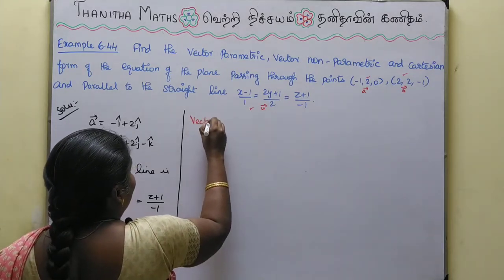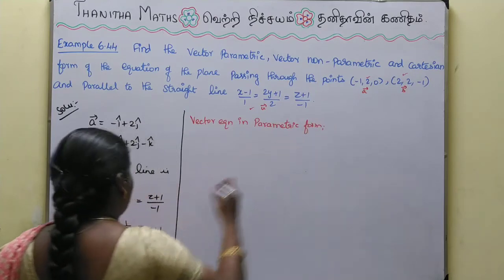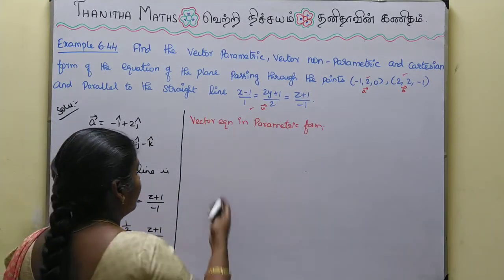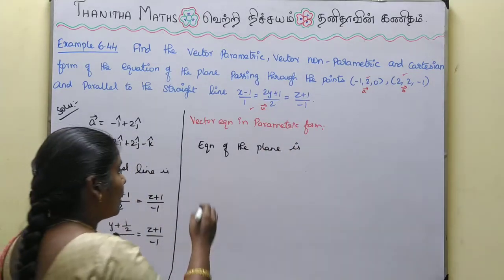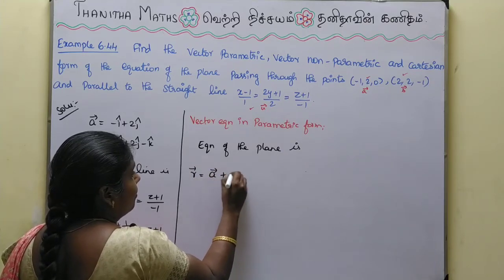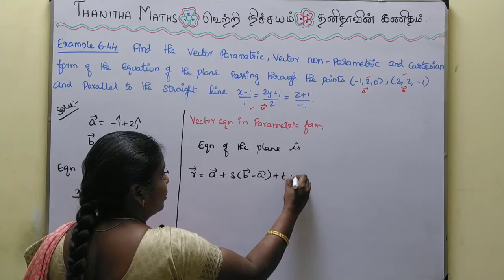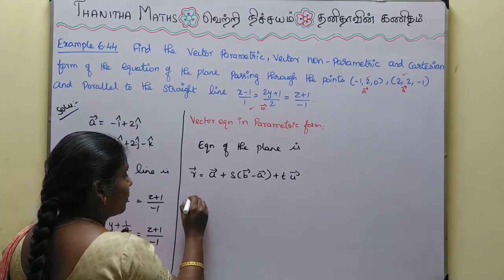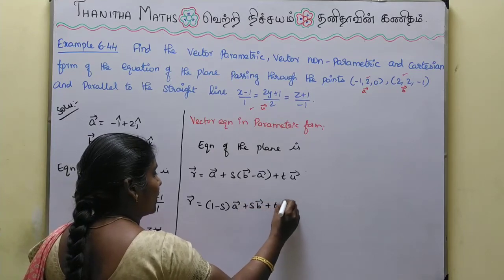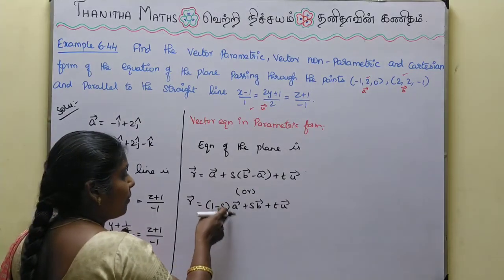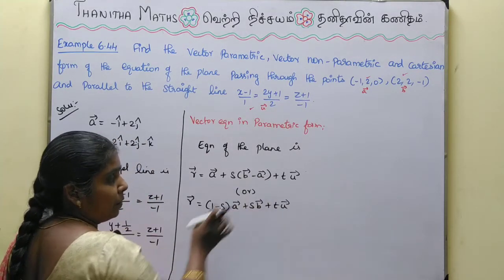Now we find the vector parametric equation. The equation of the plane has two points and one parallel vector. The formula is: R vector = A vector + s(B vector - A vector) + t·U vector, where s and t are scalars.